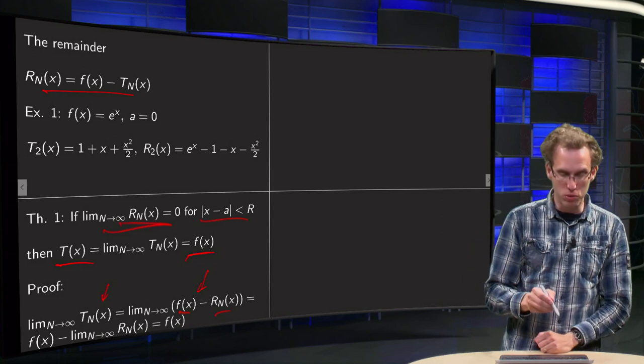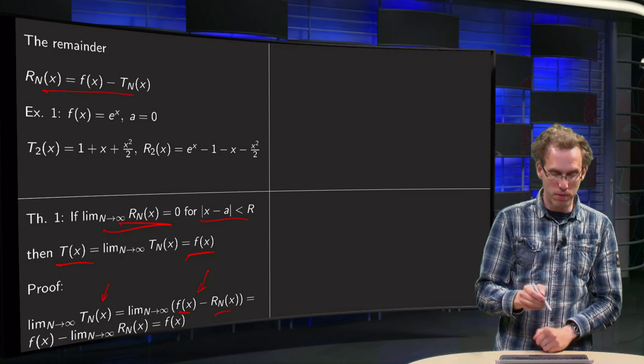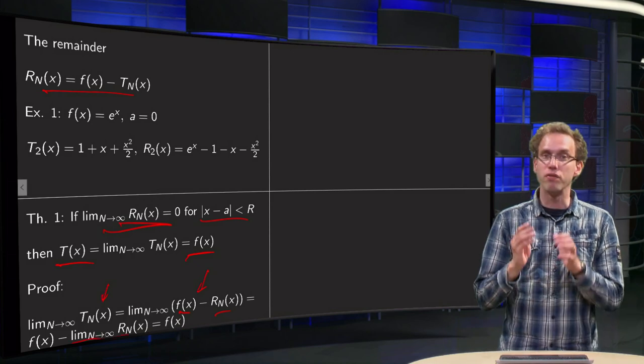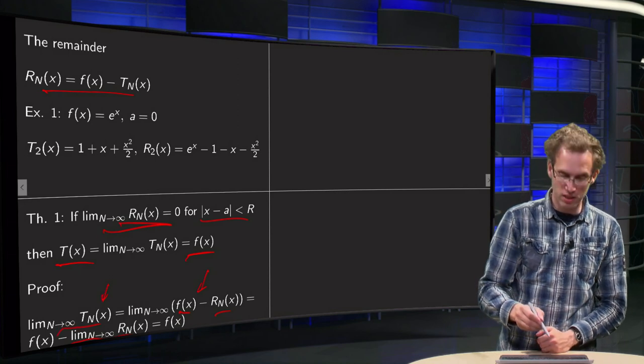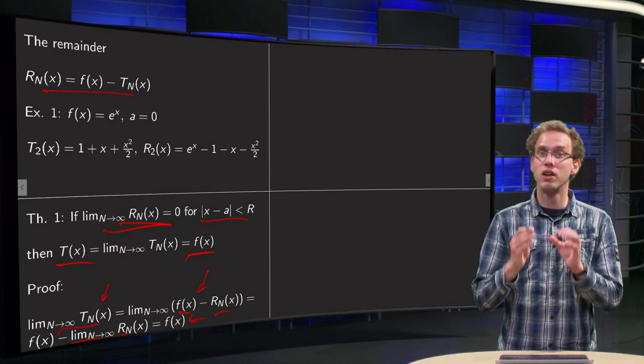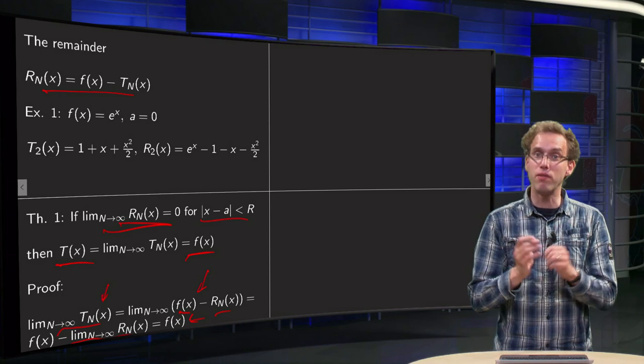So that's why we can split them up into two parts. We get f of x minus this limit of the remainder, which we assume goes to 0, so limit n to infinity T_n of x equals f of x, so our Taylor series will be equal to our function.